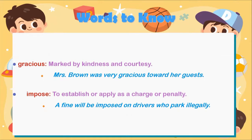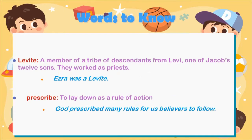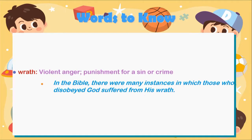Diligence: careful and continued work. 'With patience and diligence you can succeed' — that includes your school work. Gracious: marked by kindness and courtesy. 'Miss Brown was very gracious towards her guests.' Imposed: to establish or apply as a charge or penalty. 'A fine will be imposed on drivers who park illegally.' Levite: a member of a tribe of descendants from Levi, one of Jacob's 12 sons — they worked as priests. Ezra was a Levite. Prescribed: to lay down as a rule of action. 'God prescribed many rules for believers to follow.' Wrath: violent anger or punishment for a sin or crime — in the Bible, those who disobeyed God suffered from his wrath.